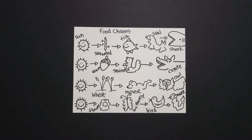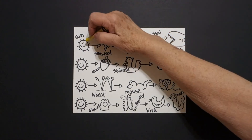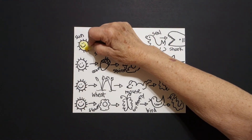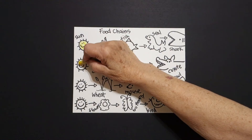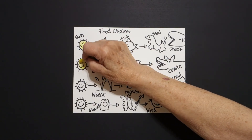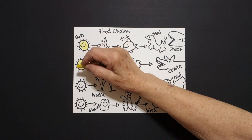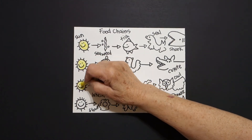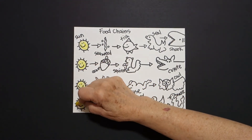So here are four examples of four different food chains that all start with the sun. Now let's see how we're going to color this in. You can color most of it any way you want, but I would suggest you do your suns yellow — traditional yellow — as the beginning for each food chain in the sequence.